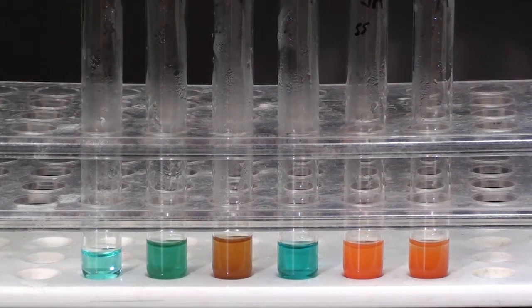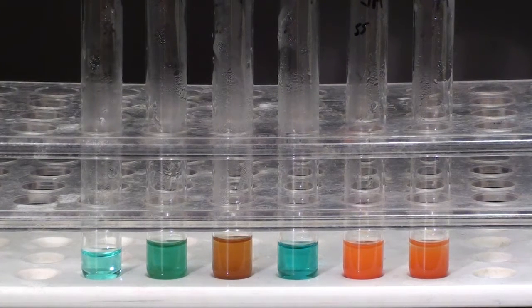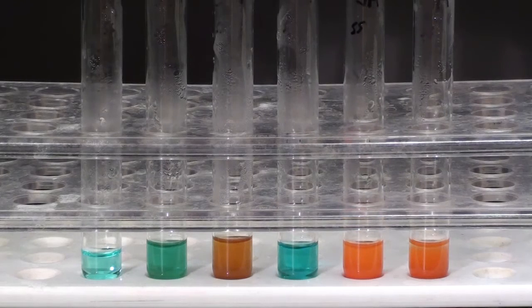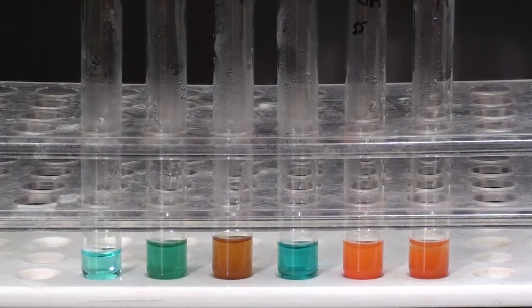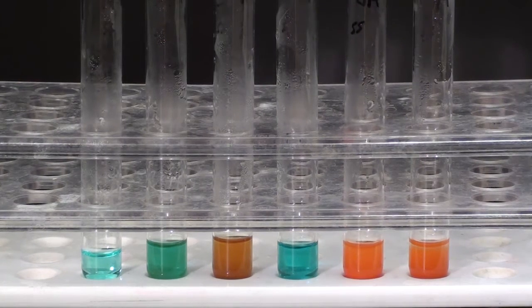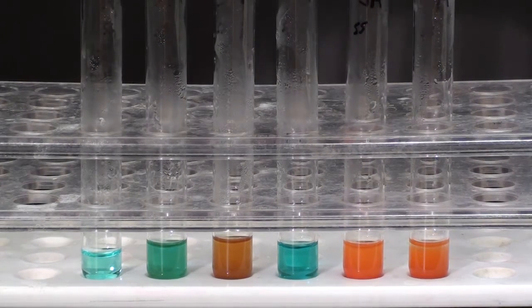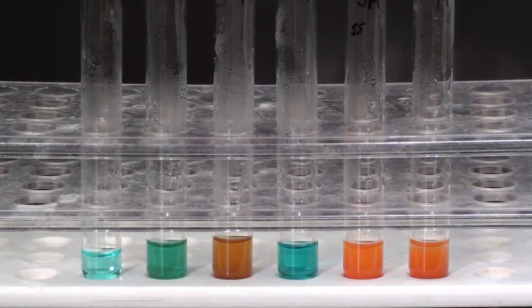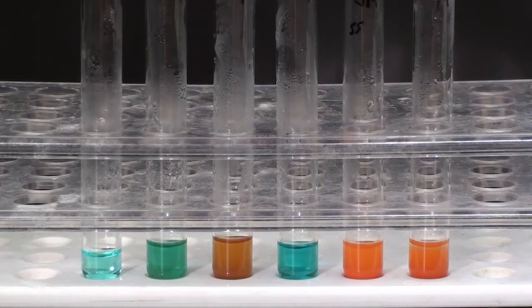Test tube five was amylase and starch. After a half an hour body temperature, lots of sugar was produced. We can see that because the Benedict's reacted with the sugar and produced this orange brick color.